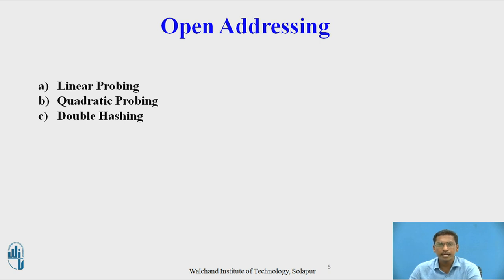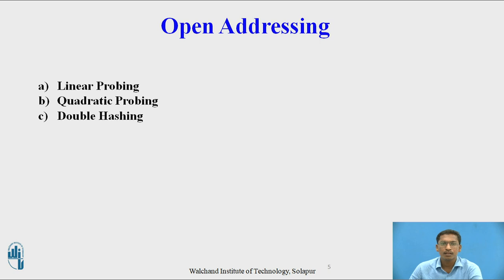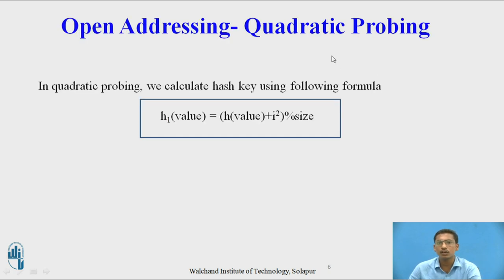For open addressing, there are three sub-methods: linear probing, quadratic probing, and double hashing. In the previous video, we saw the implementation of linear probing, where if collision occurs, a new value is inserted in the next free slot. In this video, we will concentrate on quadratic probing. In quadratic probing, the hash key is calculated using the formula: hash_key = (hash_key + i²) mod size. Because of the i², the method is named quadratic probing.